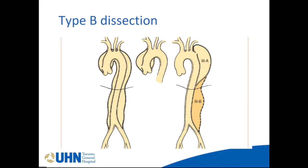Type B dissection is dissection of the aorta distal to the left subclavian artery. A lot of times it is medically managed. Surgery is indicated only if there is an ischemic complication — bowel, spinal cord, or limb ischemia — or impending rupture. Yesterday they did a TEVAR for a type B dissection due to impending rupture; last week's type B dissection case was due to spinal cord ischemia. If the anatomy is good, they do a TEVAR; if not, they get a thoracoabdominal aneurysm repair.